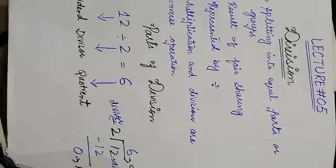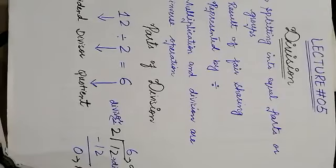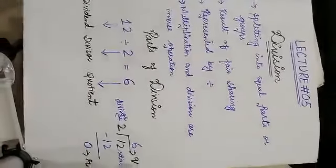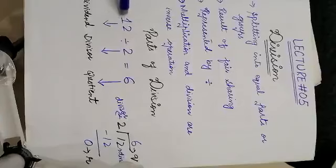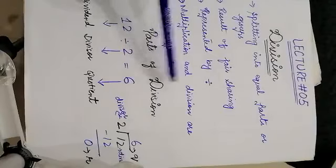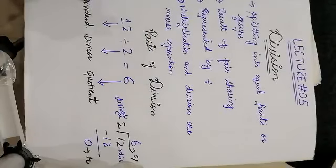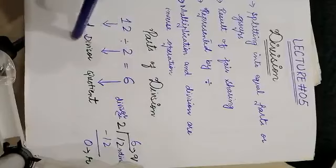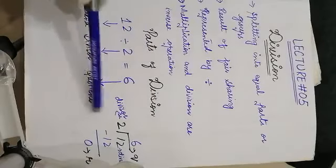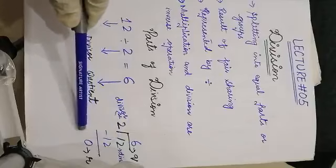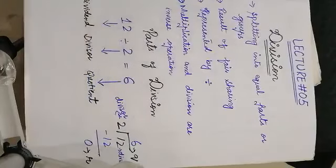Now we are going to learn the division of numbers up to four digits by numbers up to two digits. We have also learned the terms associated with division. There are two main parts of division: the first is the dividend and the second is the divisor. For example, 12 divided by 2 equals 6 — here 12 is the dividend, 2 is the divisor, 6 is the quotient, and the remainder is 0.